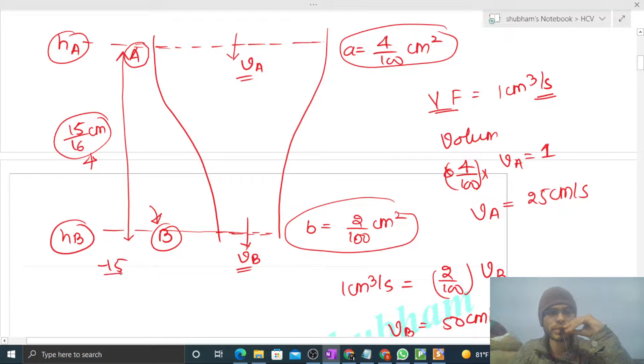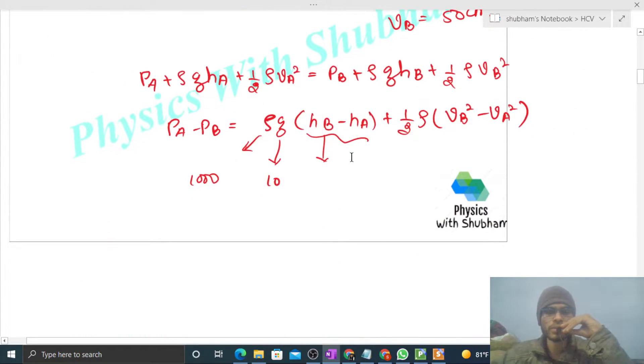It will be minus 15/16 centimeter. So you can convert it to meter also. The value will be minus 15/16 in centimeters, so divide by 100 and this will be in meters. Density of water will be 1000.